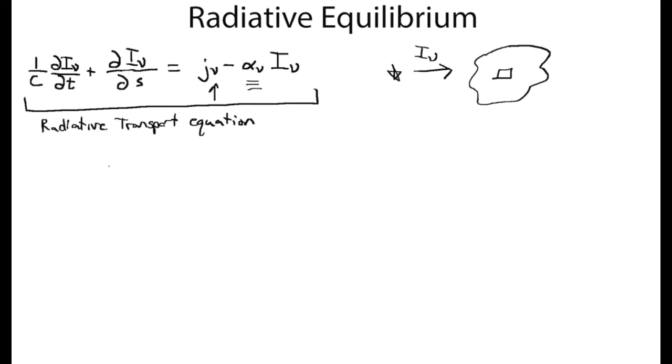Now in the context of thermal equilibrium, we've also come up with the construct of a source function, which is the ratio of the emissivity to the extinction. And we've said in local thermal equilibrium, S nu goes to a Planck function, becomes Planckian.